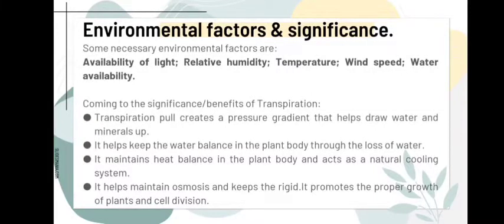Next are the environmental factors and significance of transpiration. Transpiration has a lot of significance and benefits. Generally, the water that comes up to the leaves creates a pressure gradient throughout the whole plant. Therefore, water as well as minerals are transported upwards in the plant.